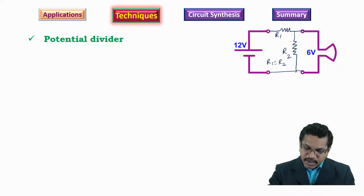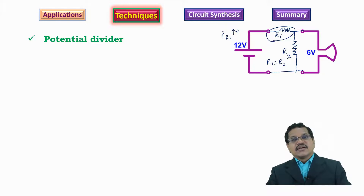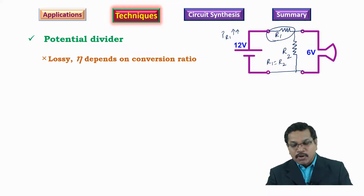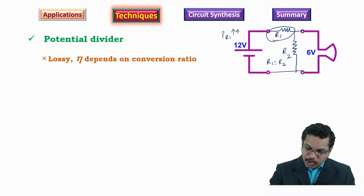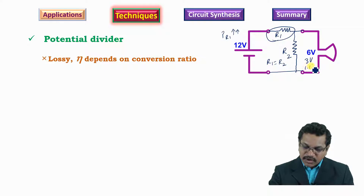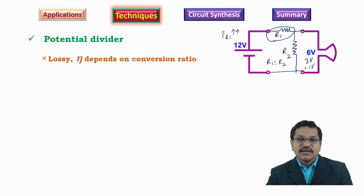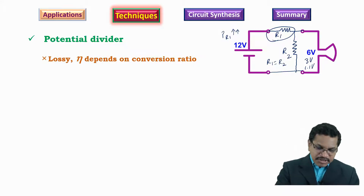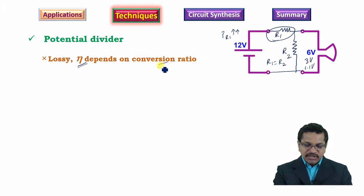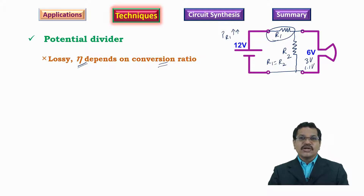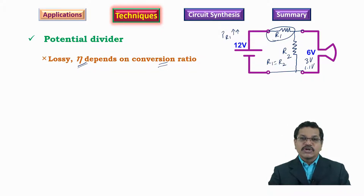The problem is there will be a lot of potential drop across R1, so the power dissipated across R1 is going to be enormously high, and as a result the efficiency is going to come down. If the voltage required at the load end is low — say 3 volts, 1.1 volts, or even lower — the efficiency drops further because the remaining voltage is dropped across the resistor. The efficiency depends on the conversion ratio, which is not preferable, so the potential divider arrangement fails.